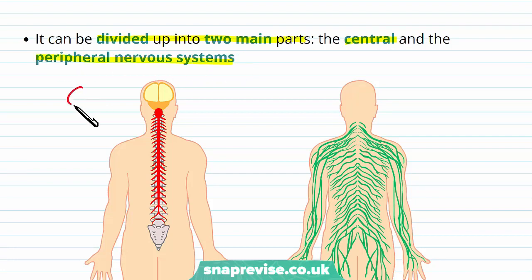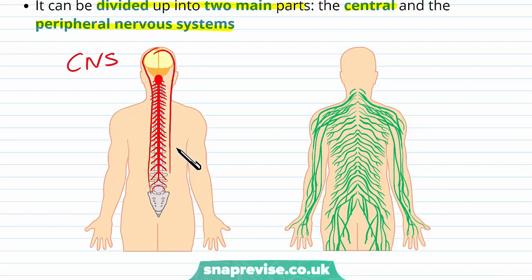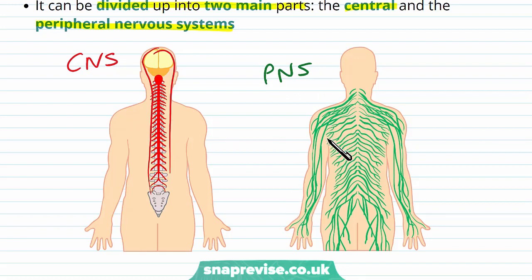The central nervous system, or CNS, consists of the nerves in the centre of the body — this is the central nervous system here, running through the core of the body. And the peripheral nervous system, or PNS, is the nerves that radiate out from the CNS to the rest of the body, like our limbs, around the trunk, up to the head, everywhere else.